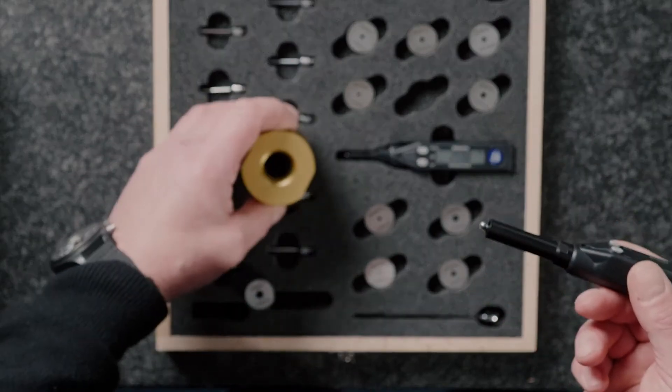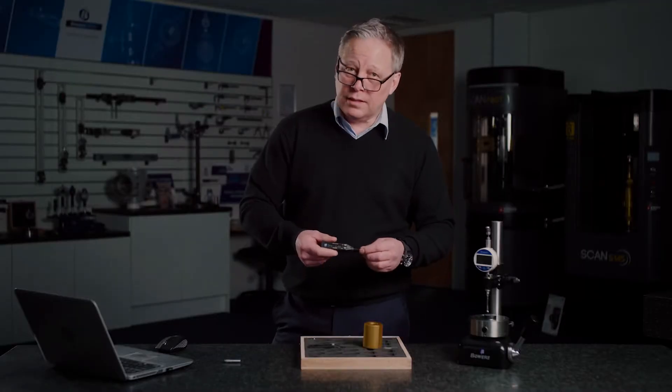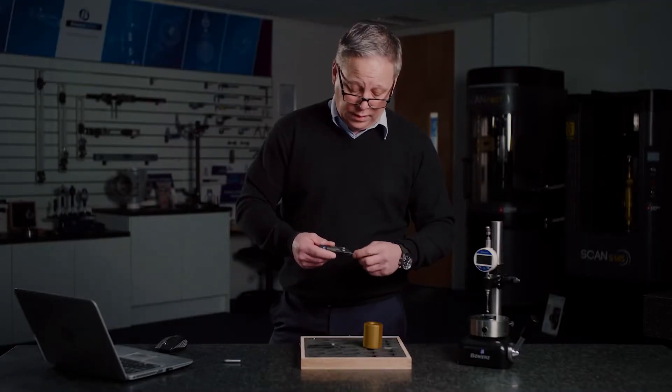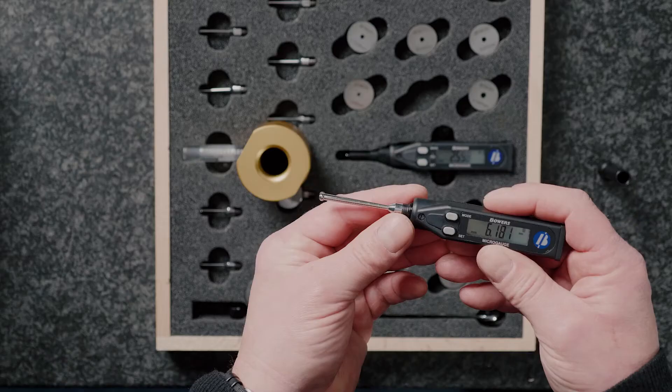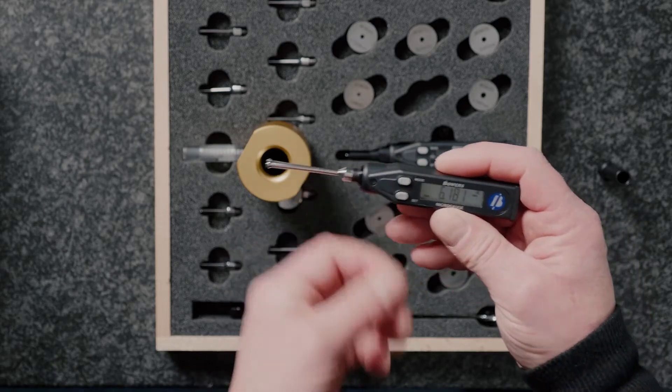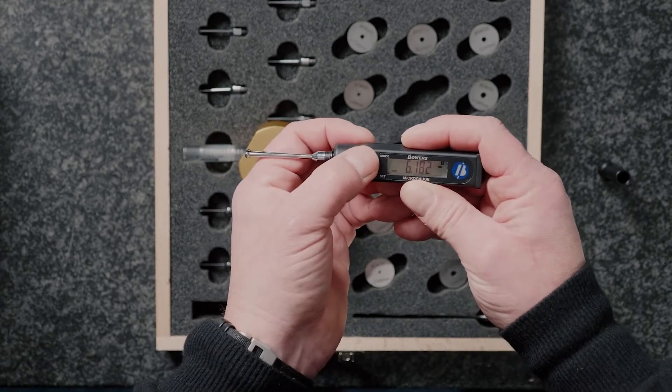However, if the bore has been machined from an angled face or from a diameter, then we're going to need to use the diameter mode within the gauge itself. So let me just show you that.